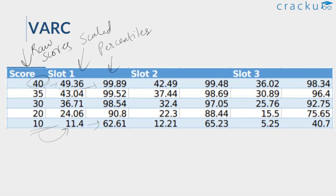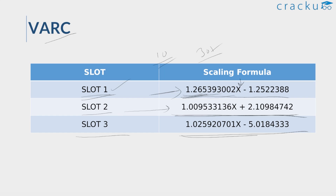For Slot 2 VARC, for a score of 40, the scaling was not very high — just 2.49 up. Similarly, across the lower ranges, the increase is just 2.21. These are the respective percentiles for these marks.